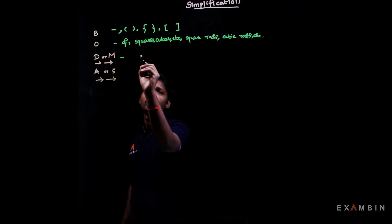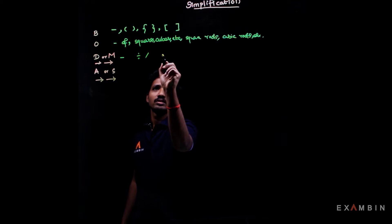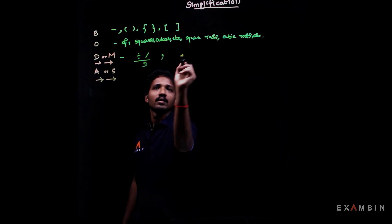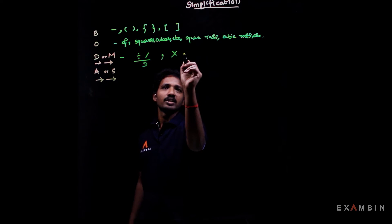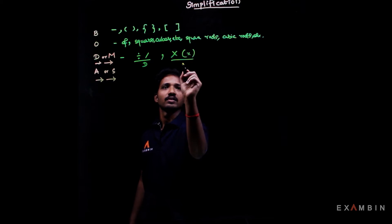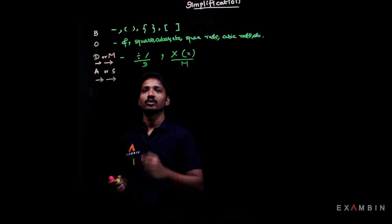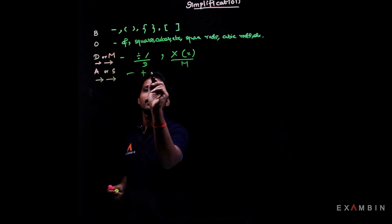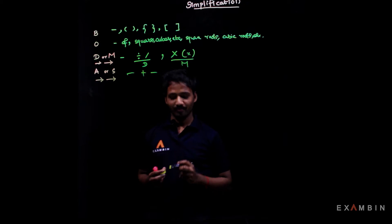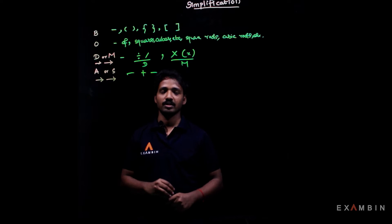Division and multiplication are often denoted by specific symbols, and multiplication can also be written as 'of' a number, like in India. Addition and subtraction are denoted simply as plus or minus. Let's look at some basic problems to understand this concept.